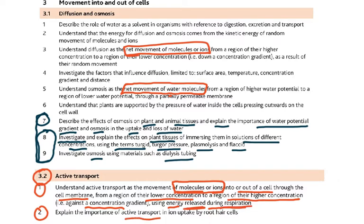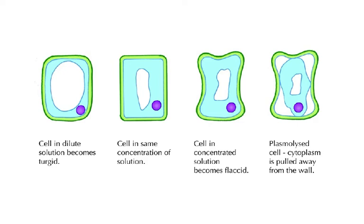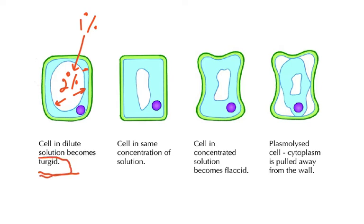It is important to explain the role of active transport in ion uptake by root hair cells. Now, a plant cell in a dilute solution becomes turgid. A dilute solution means, for example, 1% outside and 2% inside the cell. Water will enter, pressing the cell membrane against the cell wall, and the cell becomes fully turgid.